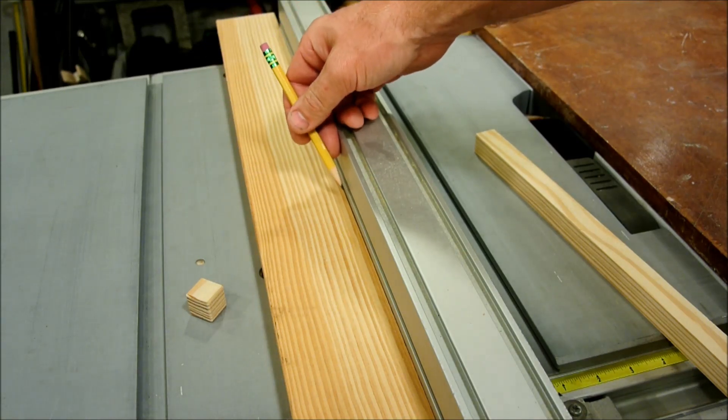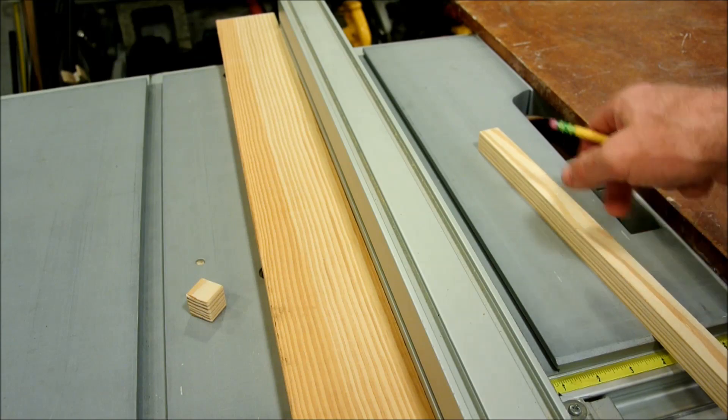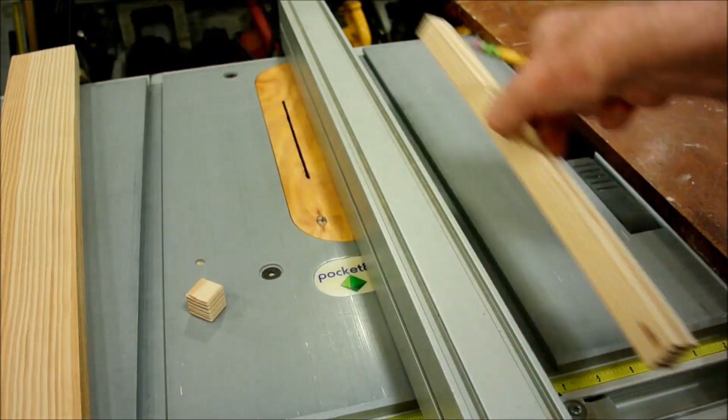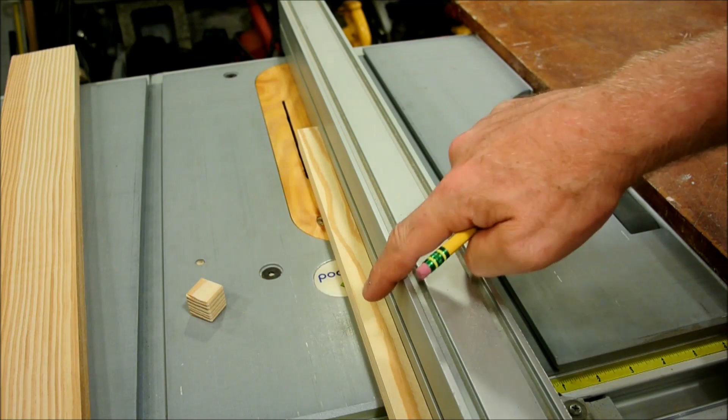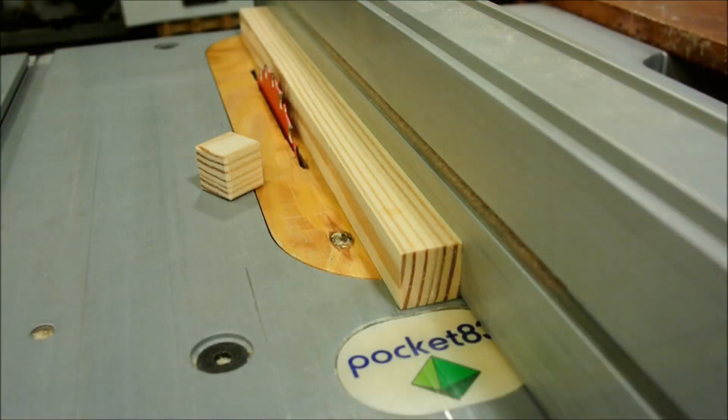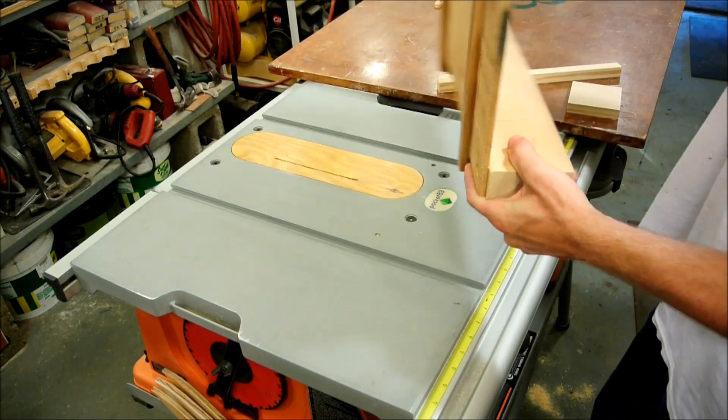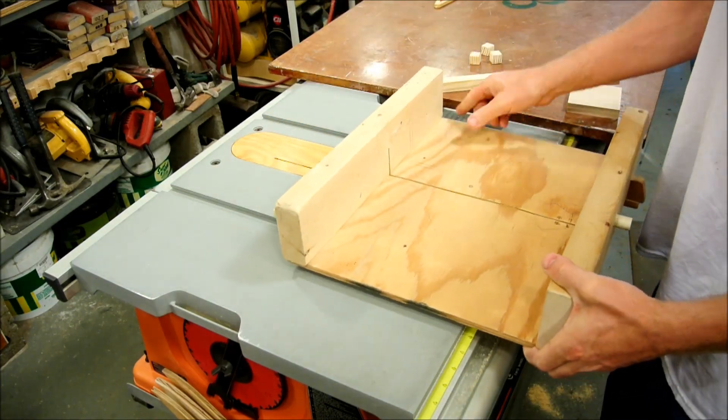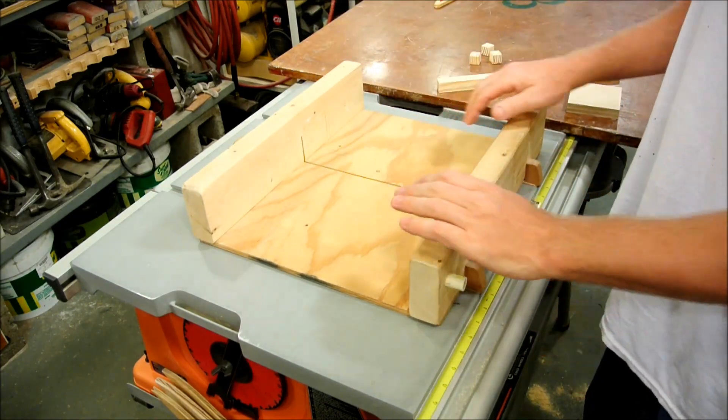You could all but eliminate it if you use a jointer, but if you don't have a jointer, the easy way is to just cut using short pieces. Next, we cut them for length. You can use a miter saw, but I think my favorite way is to use a table saw sled.